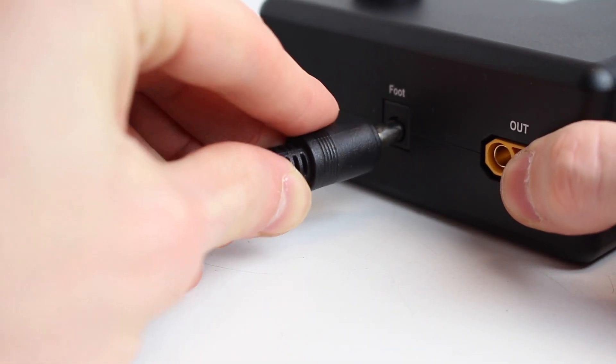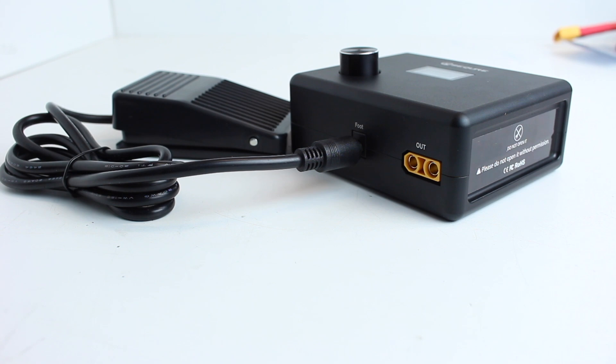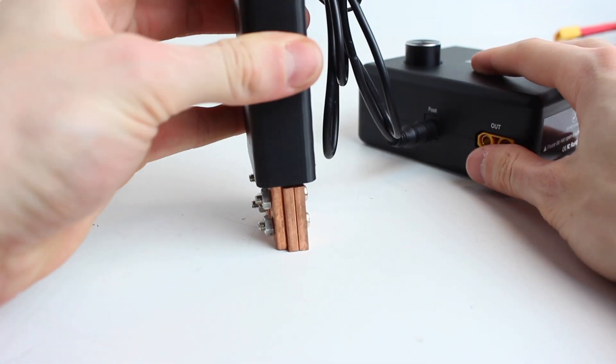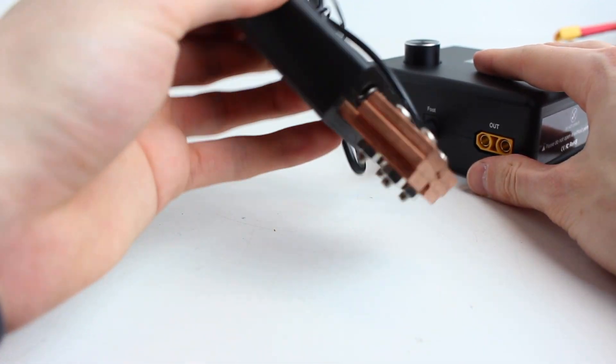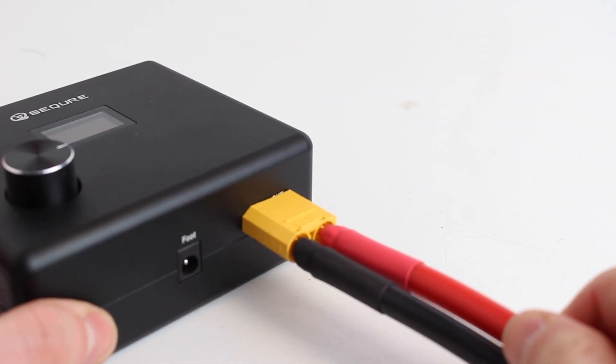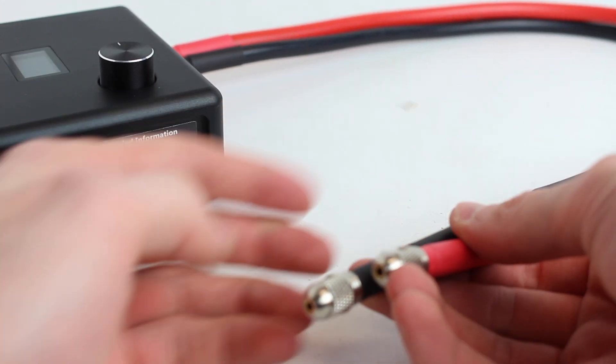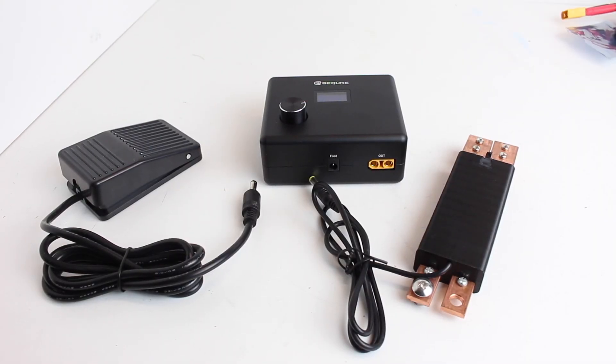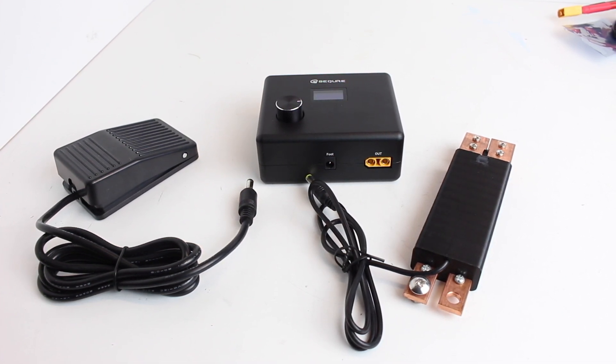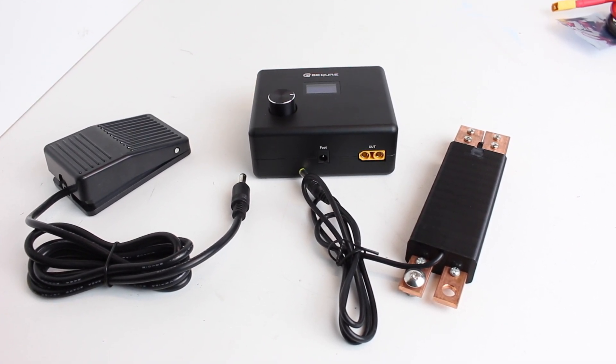If you want to use either of the two accessories, the spring loaded welding tip or the foot pedal, there's a port on the side of the welder which is super easy to use and very intuitive to set up. The output section of your welder is pretty simple. There's just an XT60 port and you'll plug in one of those two thick wires into it and that's pretty much it. So that's everything that comes inside the Secure spot welding kit. There's a ton of accessories, lots of cool stuff in there for that $219.99 price point. Overall I was really impressed with the quality of everything.